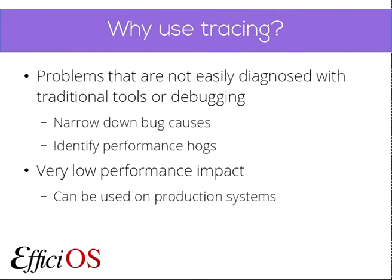Why would we use tracing? Most of the time it's to debug problems that are not easy to fix — when you've tried all the classic debugging tools. It can be used to narrow down bugs and latency problems. It has a very low performance impact and it's highly suggested to be used in production so you can debug real problems while they are happening.